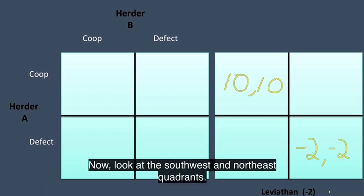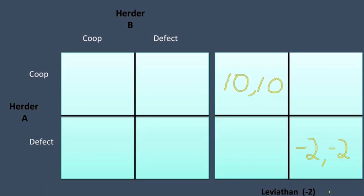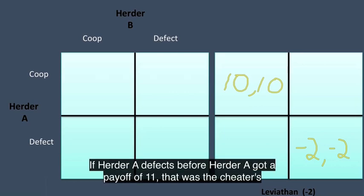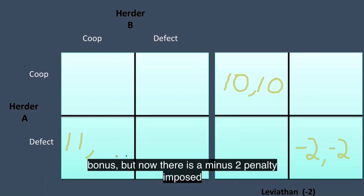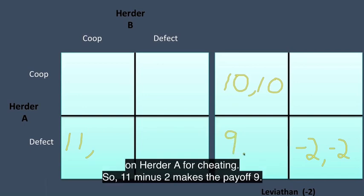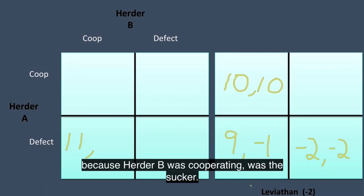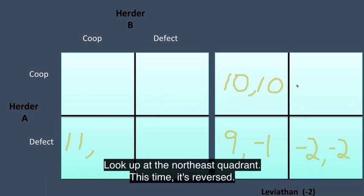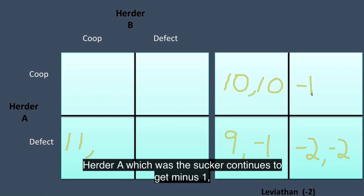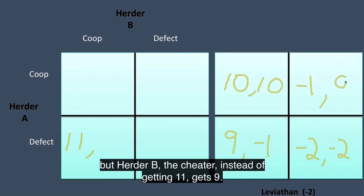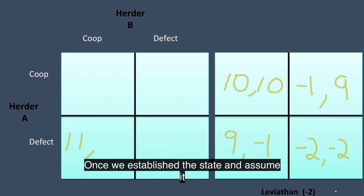Now look at the southwest and northeast quadrants. Those are the interesting ones. If Herder A defects, before Herder A got a payoff of 11. That was the cheater's bonus. But now there's a minus 2 penalty imposed on Herder A for cheating. So 11 minus 2 makes the payoff 9. Herder B's payoff of minus 1 doesn't change because Herder B was cooperating, was the sucker. Look up at the northeast quadrant. This time it's reversed. Herder A, which was the sucker, continues to get minus 1. But Herder B, the cheater, instead of getting 11 gets 9. Once we establish the state and assume it acts the way it did, look what happens now.